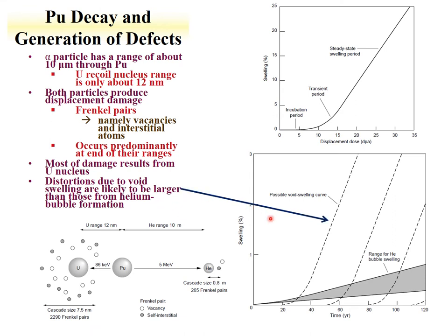Over time you get swelling and a void swelling curve. The void swelling has ranges attributable to uranium recoil, and there's a range for the swelling due to helium. The helium does contribute but does not seem to contribute as much as the void swelling. This swelling behavior has three main components as a function of dose, described in DPA (displacements per atom): an incubation period, a transition period, and then a steady state where there's a relationship between dose and swelling.